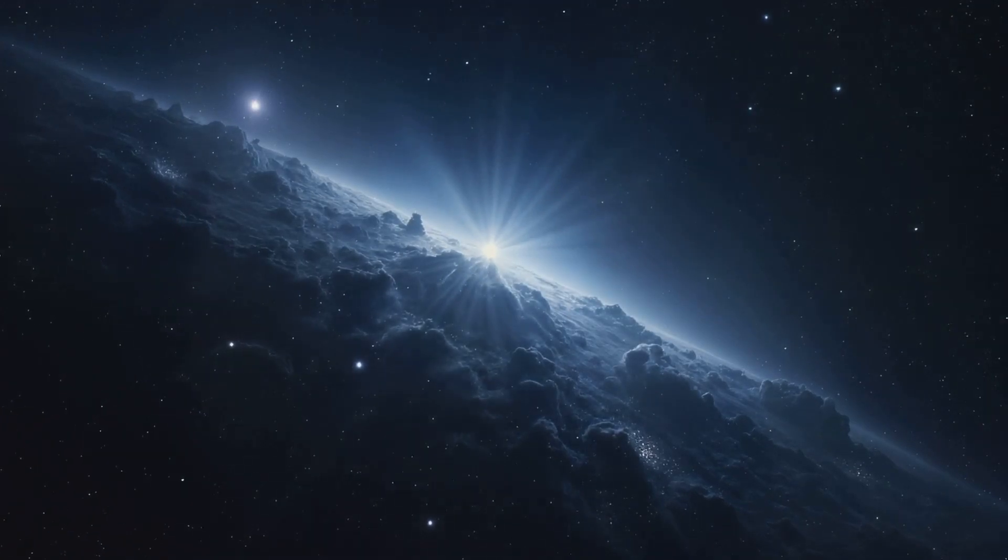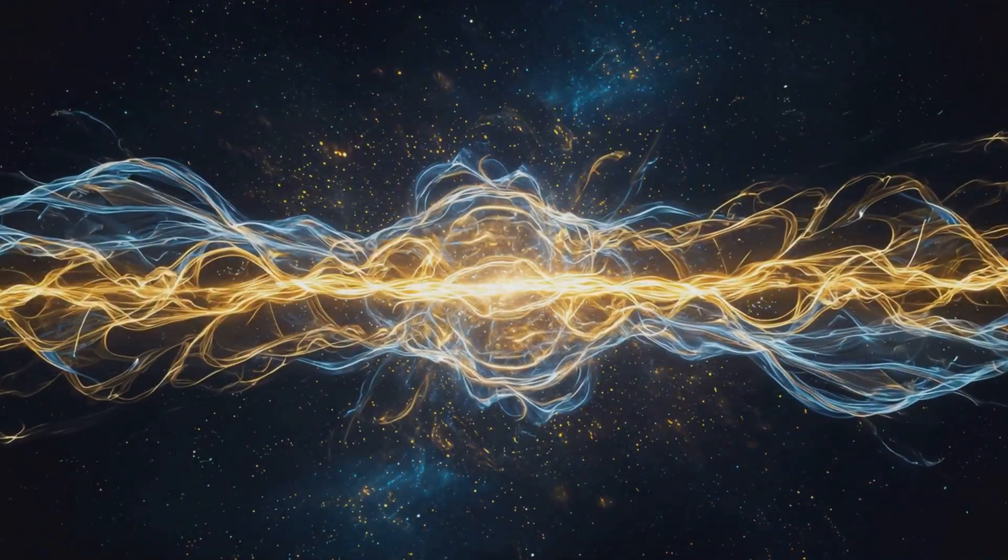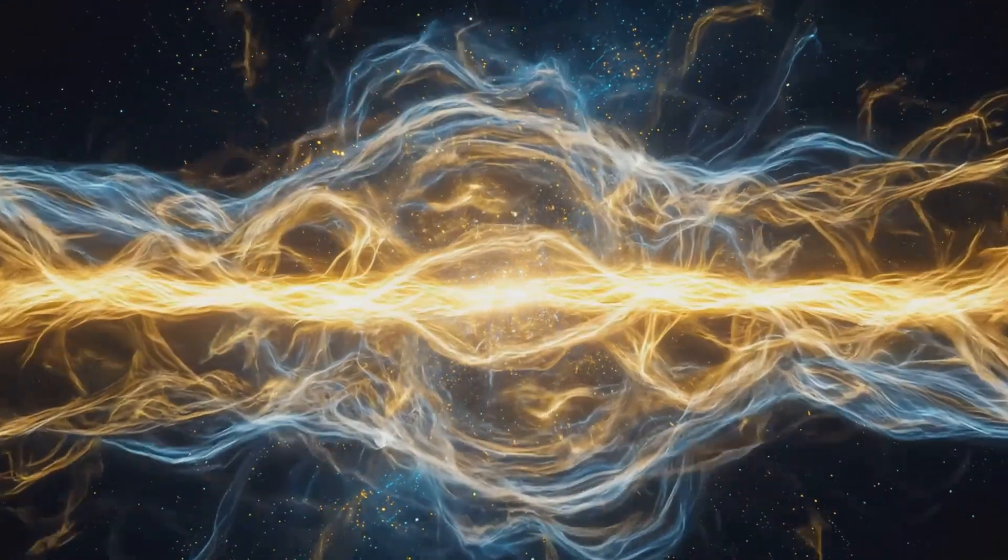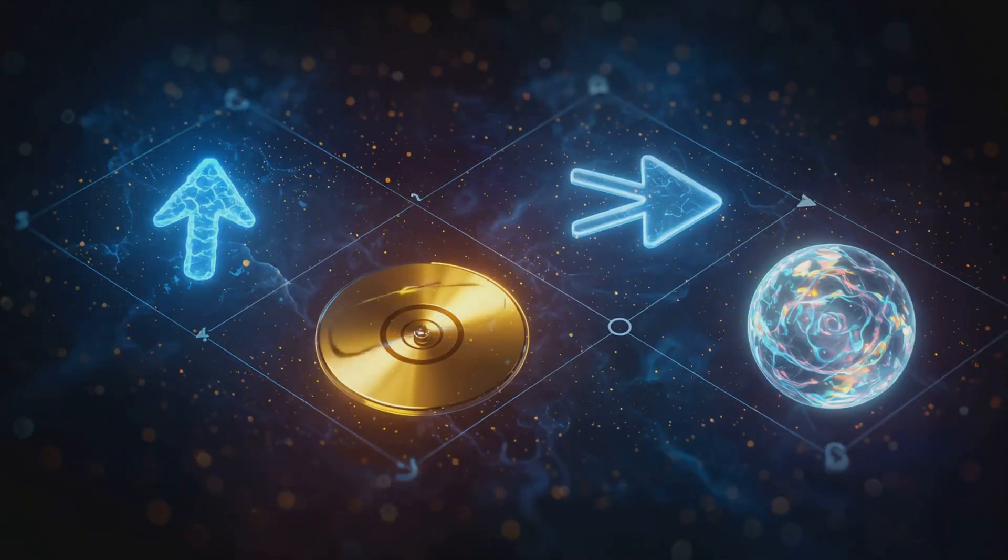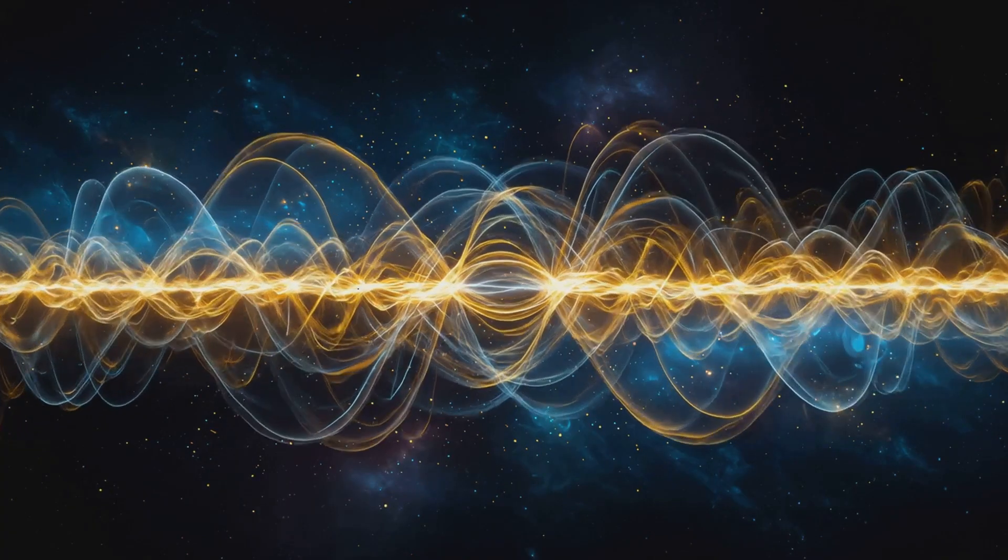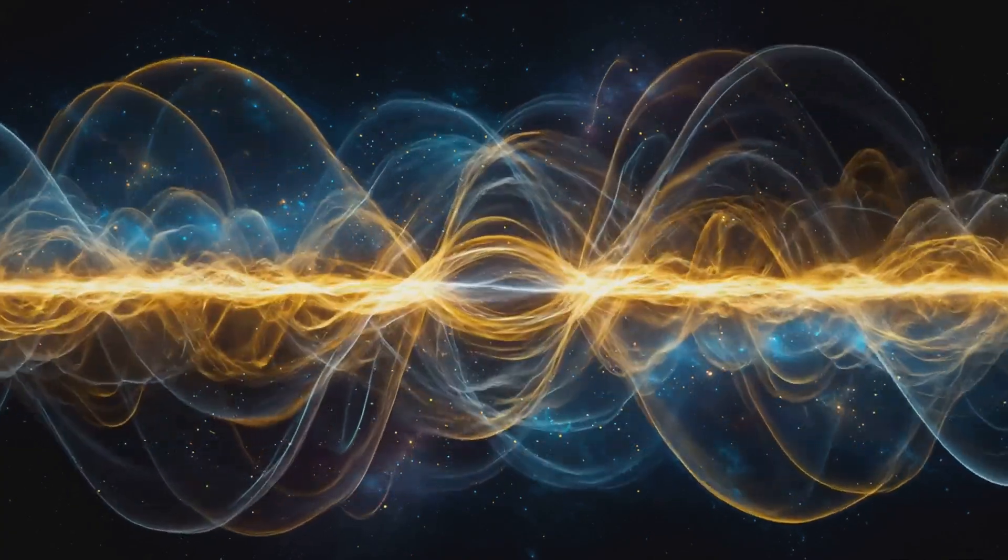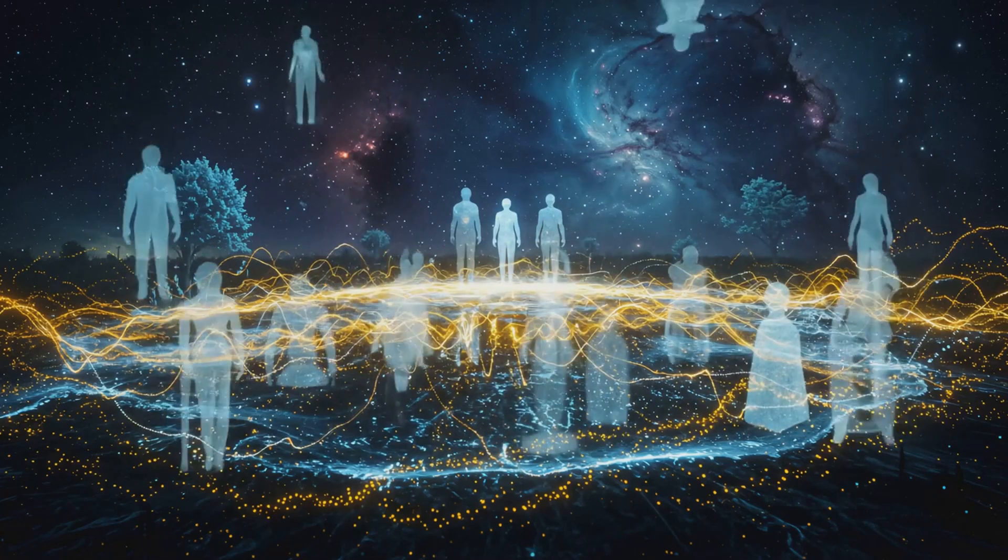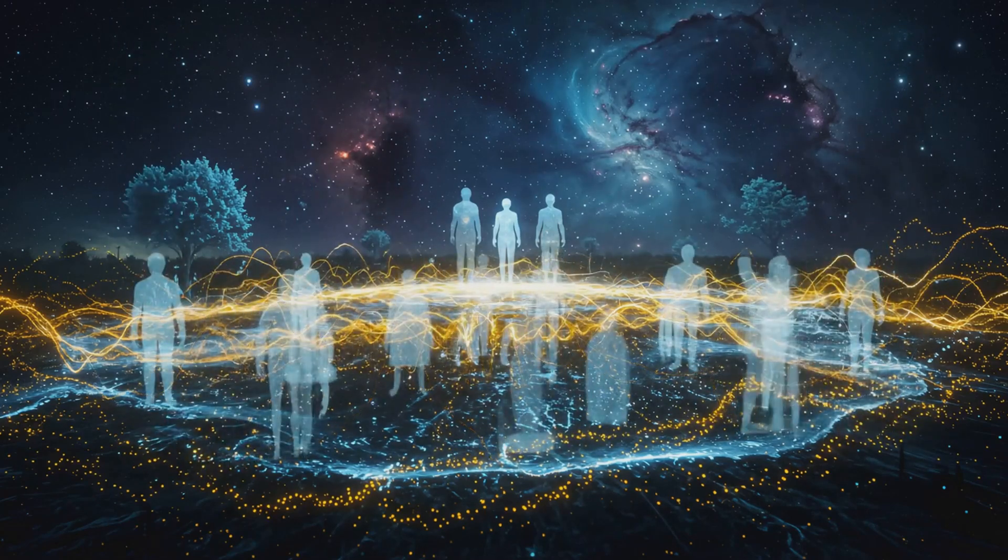If the universe could be written as a single line, it would say reality is the sum of all decoherence-resistant quantum frequencies. Each one defined by its amplitude, its likelihood, angular frequency, its spin, wave vector, its direction, and phase, its starting point. Together, they interfere and overlap into the projection of all that we see, feel, and become.